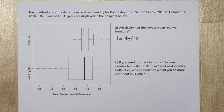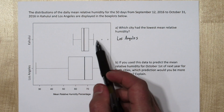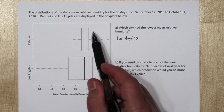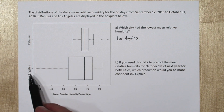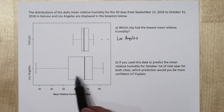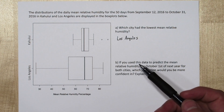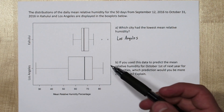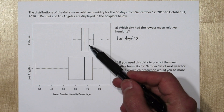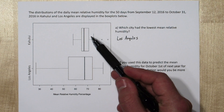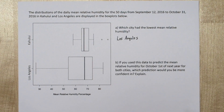Notice the Kahului box plot is really condensed — that means it varies less and is more consistent. The Los Angeles humidity varies quite a bit, shown by the much larger width of the box plot. So we would expect Kahului to be easier to predict.